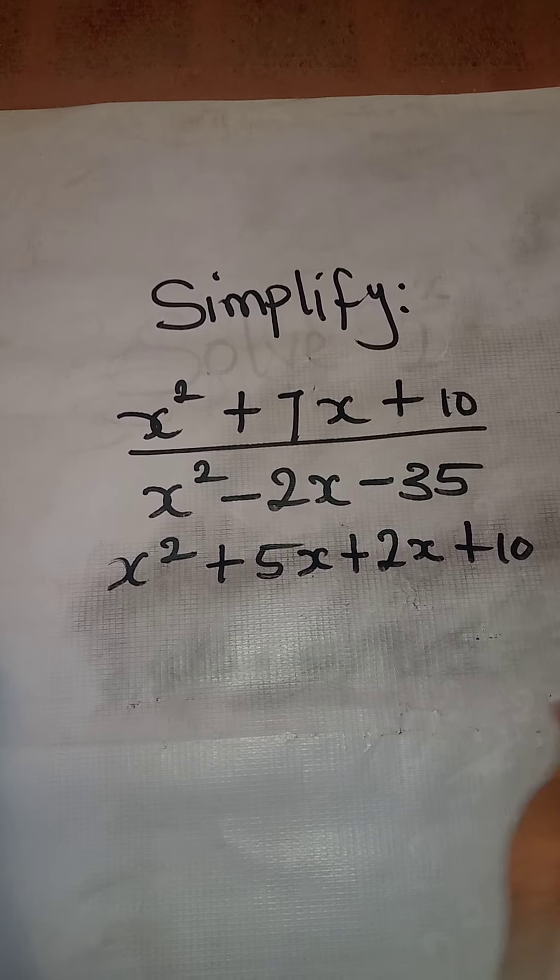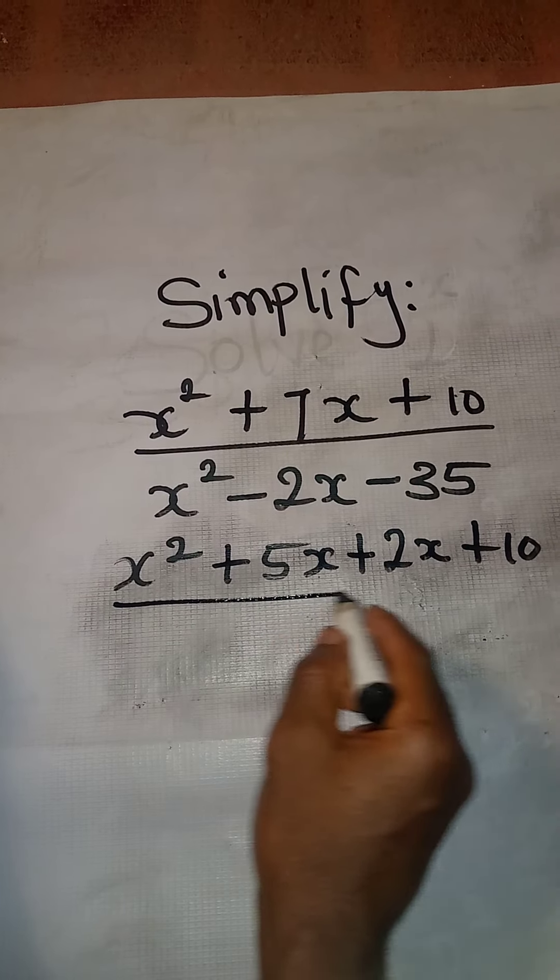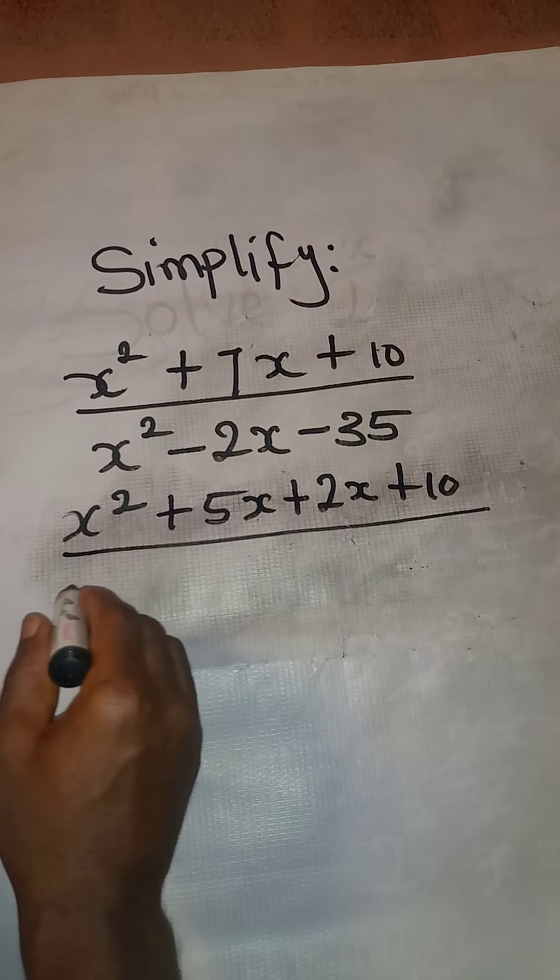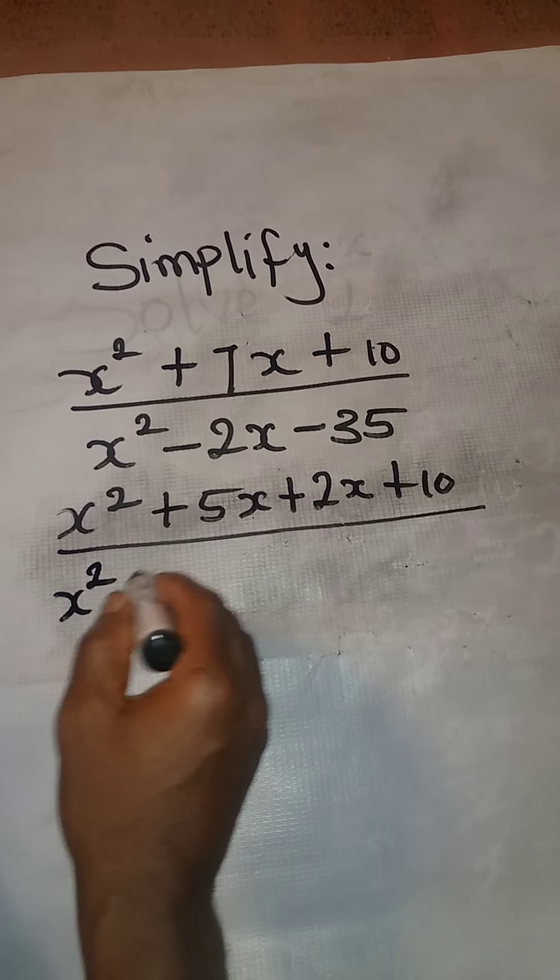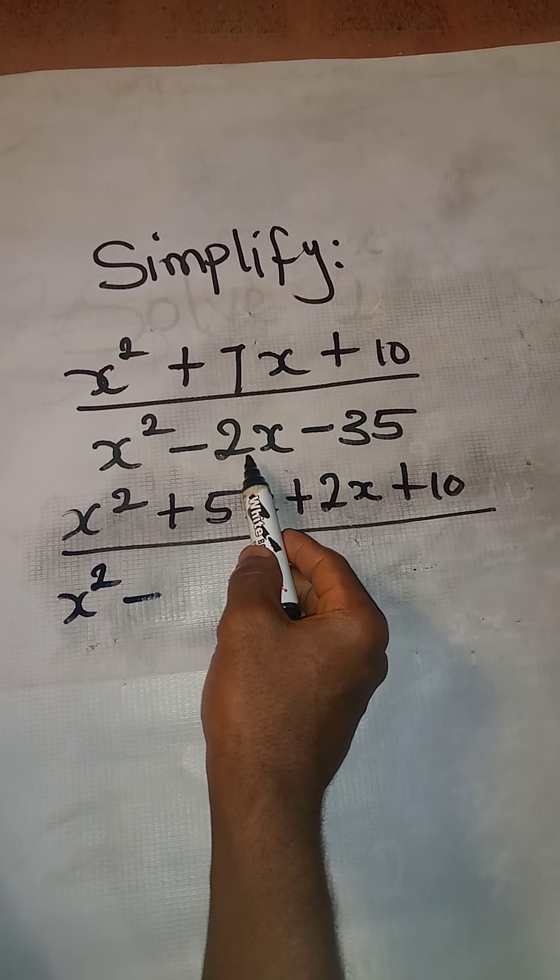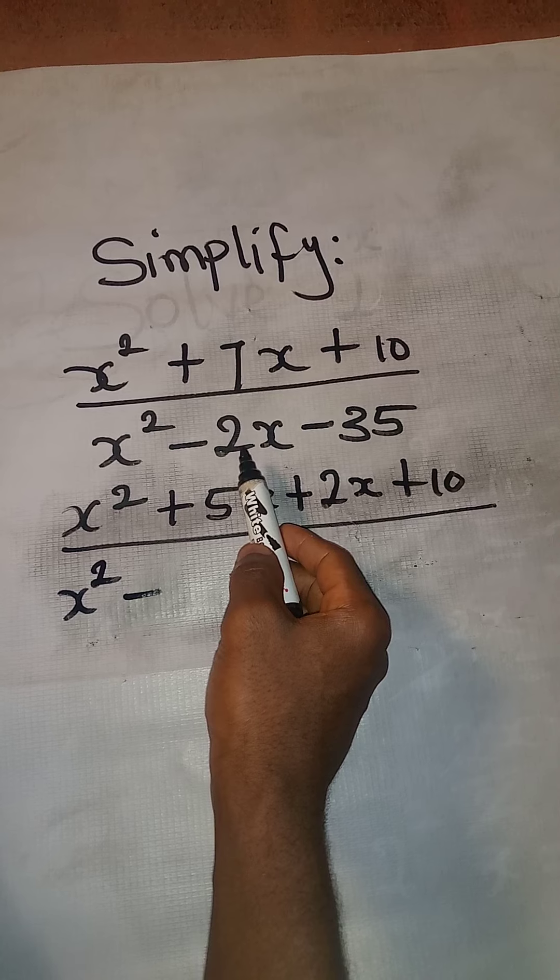Let's move down to the denominator. The denominator will still have x squared minus... What do you do in this case? What number will you multiply? What are the two numbers?